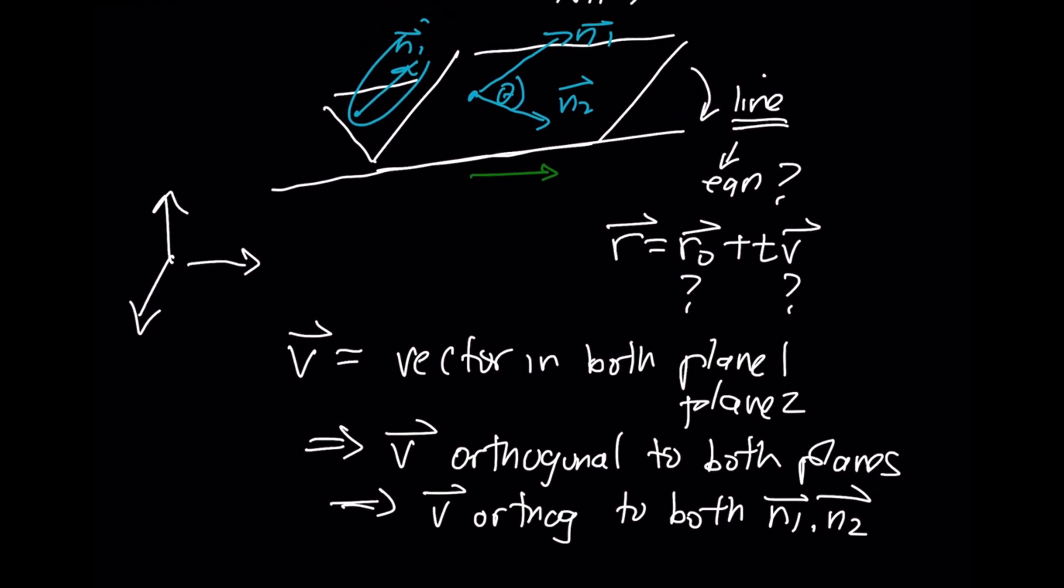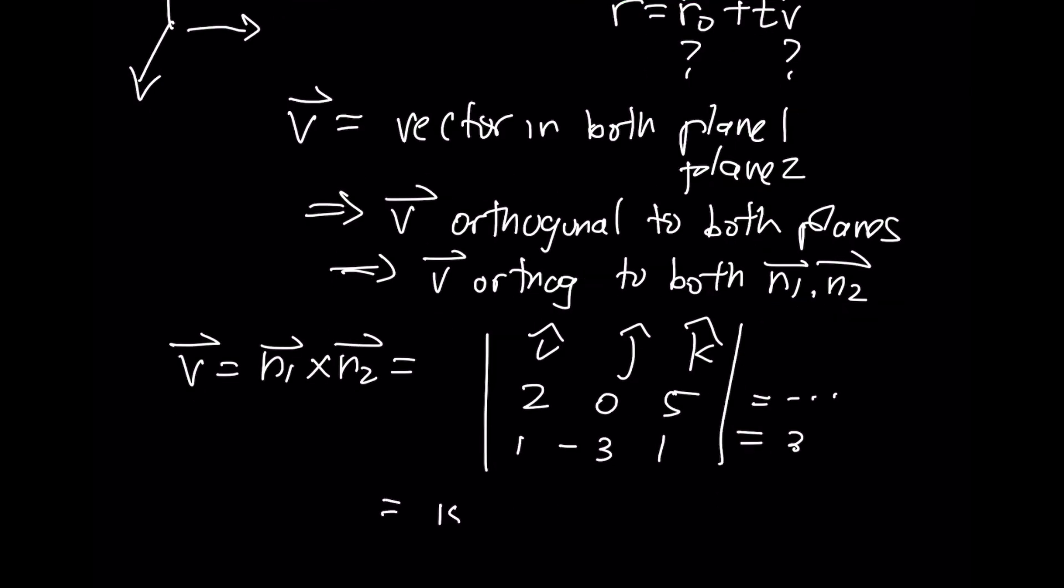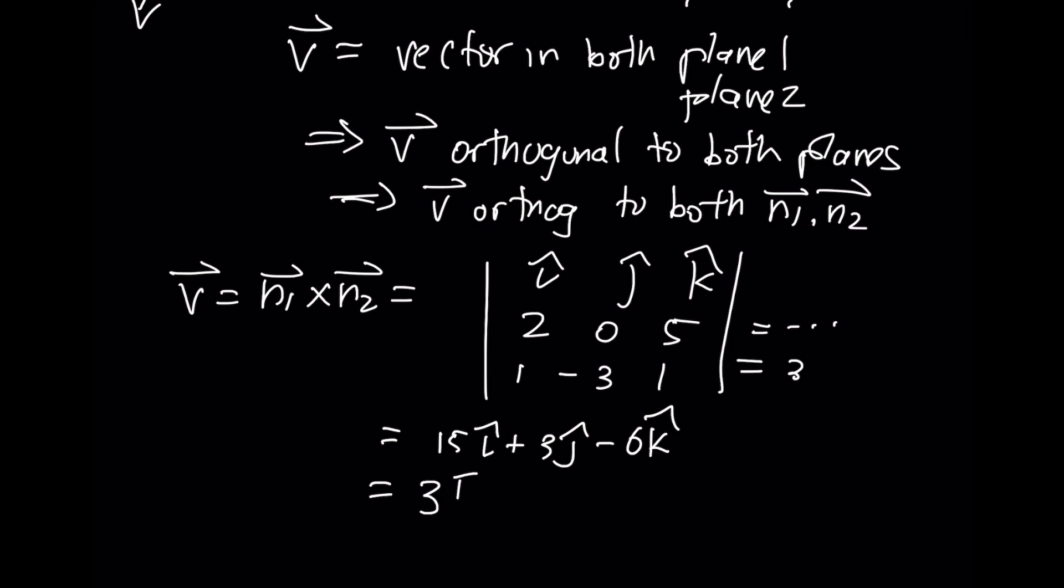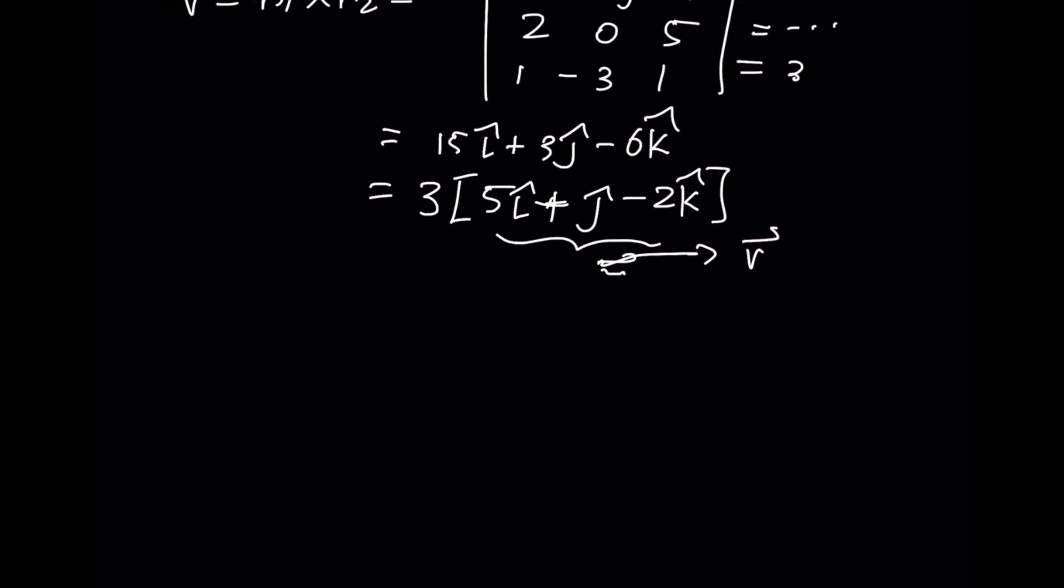That can tell me that V is simply going to be the cross product of those two vectors. So if I compute the cross product of the two normal vectors, what I will end up getting is 15i + 3j - 6k. Now you could use this as the vector V. There is a common factor of 3 everywhere. And so if you felt like it, you could take this to be the vector V.